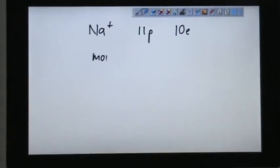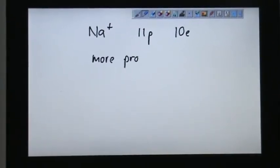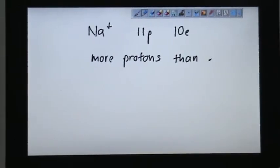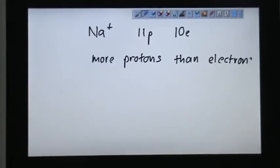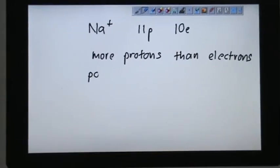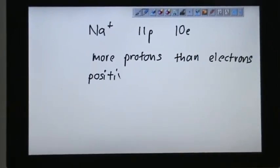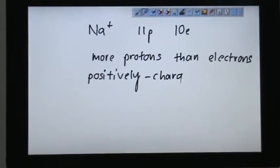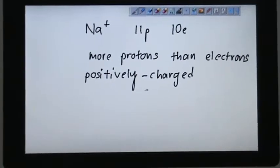If you have more protons than electrons, you are actually becoming positive charge. So Na plus, you have 11 protons and 10 electrons, so it is more protons than electrons. That's why it is positively charged. And the name for this positive ion is called a cation.